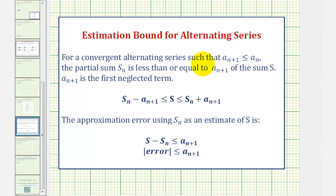We want to find a partial sum where the absolute value of the error would be less than 0.001. For a convergent alternating series such that a sub n plus 1 is less than or equal to a sub n, which is the case for our series, the partial sum s sub n is less than or equal to a sub n plus 1 of the infinite sum s.